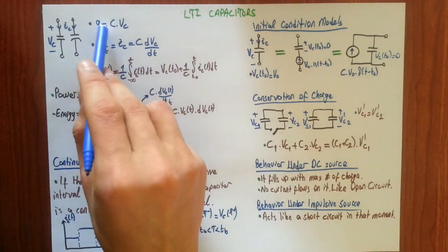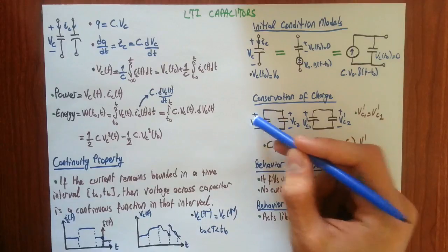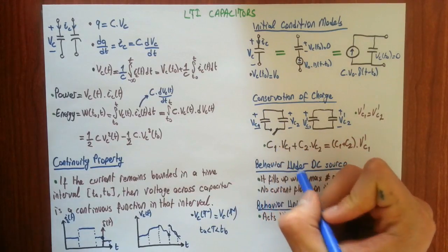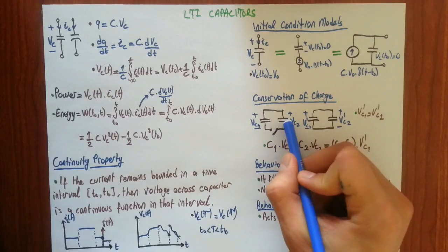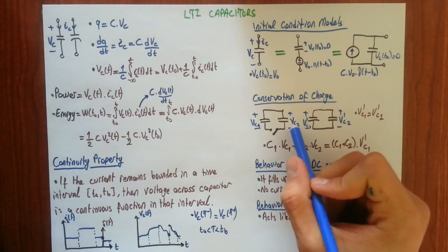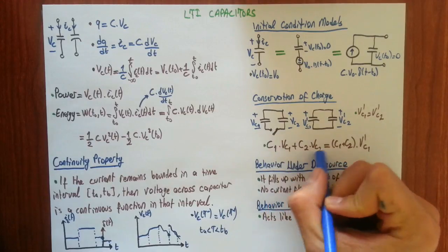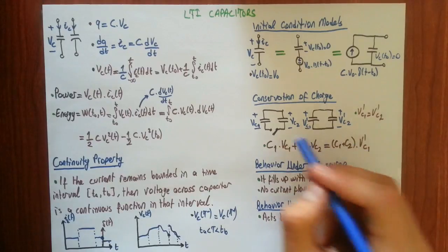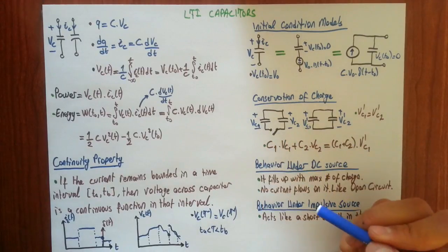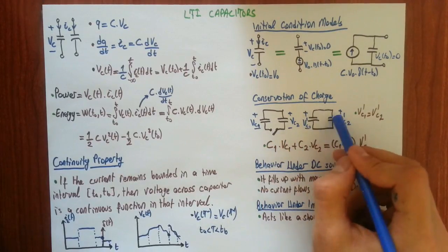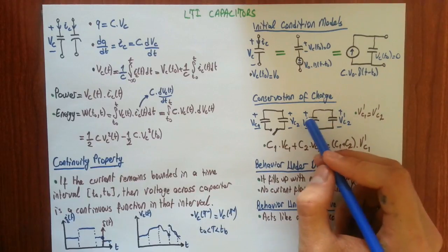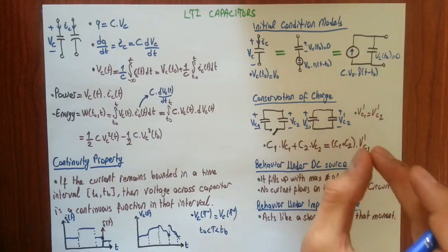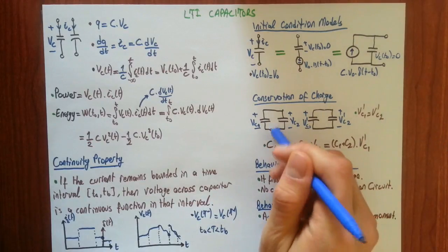You will equate charge in the first situation to the charge in the second situation. How much charge do you have in the first situation? Remember, charge is C times V. In the first capacitor, we have C1 times Vc1 amount of charge. And in the second capacitor, we have C2 times Vc2 amount of charge. If you sum this up, you can find total charge in the first case.